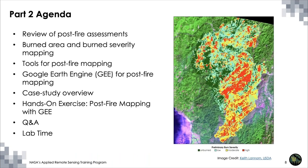Here's the agenda for today. First we'll review some post-fire assessments, then discuss burn area and burn severity mapping, and mention a few tools for post-fire mapping. Then we'll talk about Google Earth Engine — its benefits and how to use it for remote sensing assessments. After the lecture we'll have Q&A, and then we'll stay on for lab time where you can work through the code and we'll address any common issues.